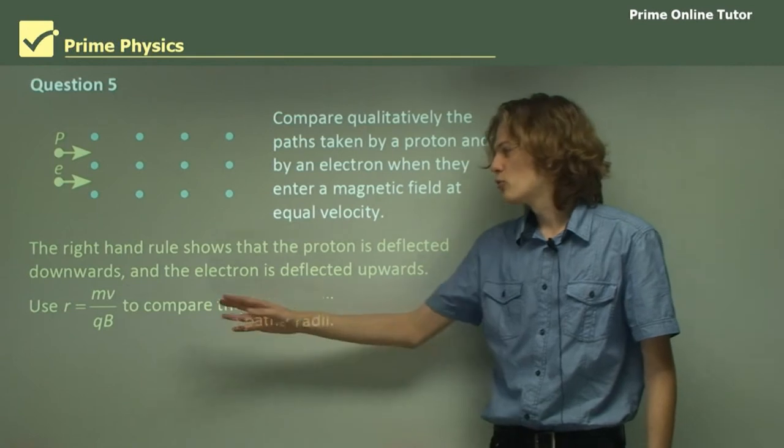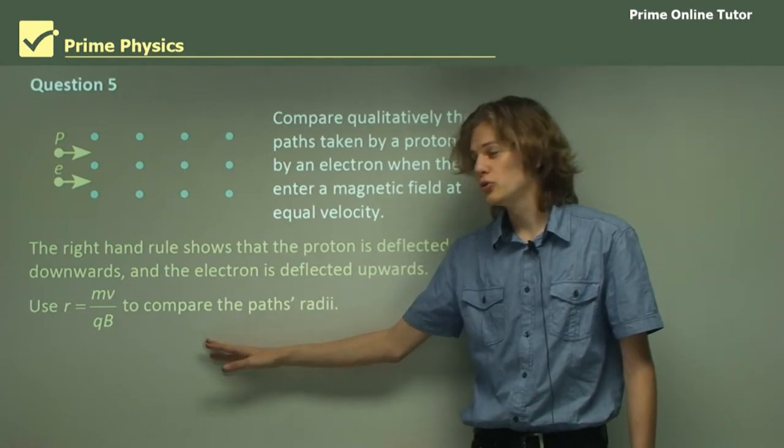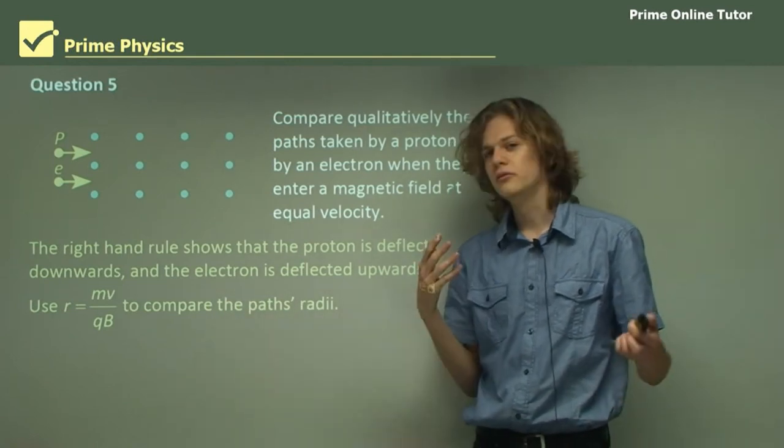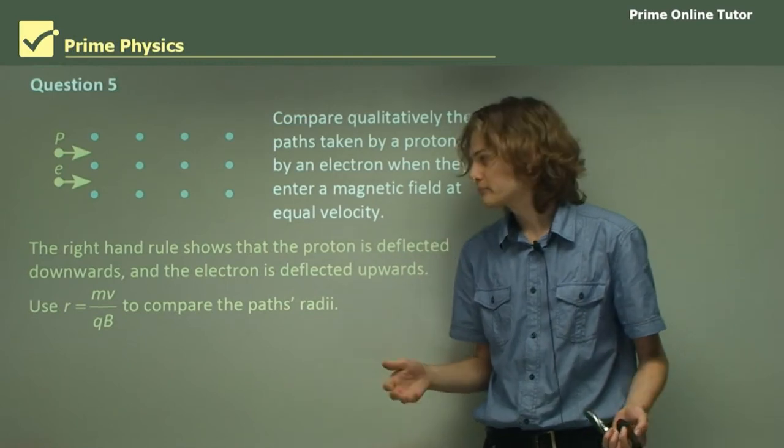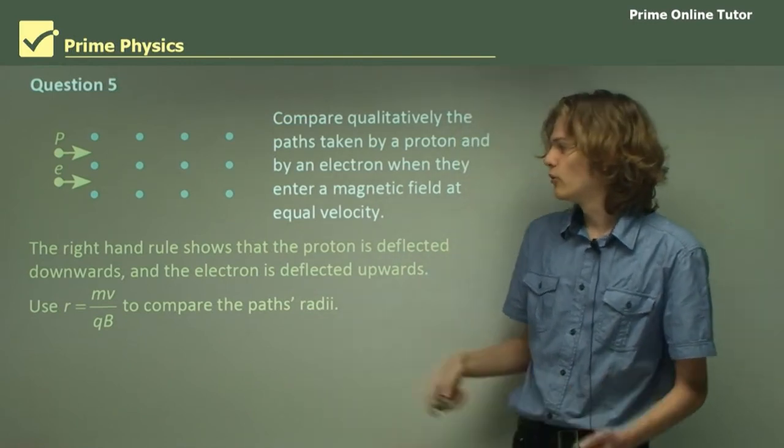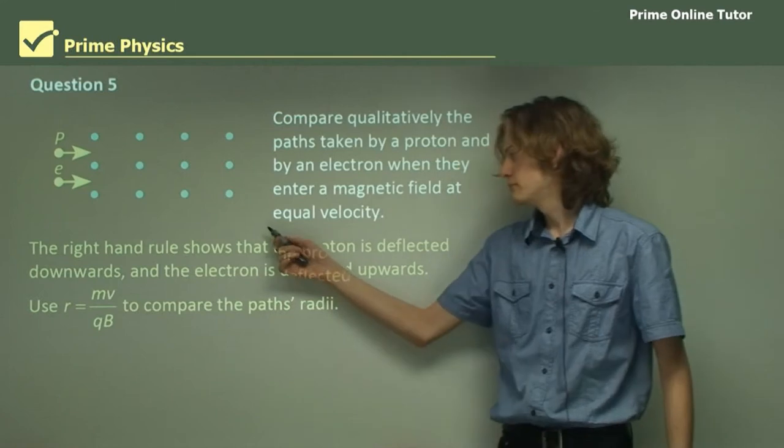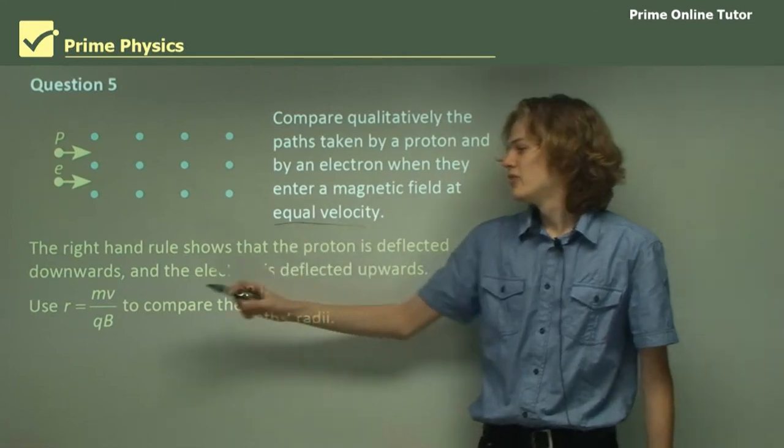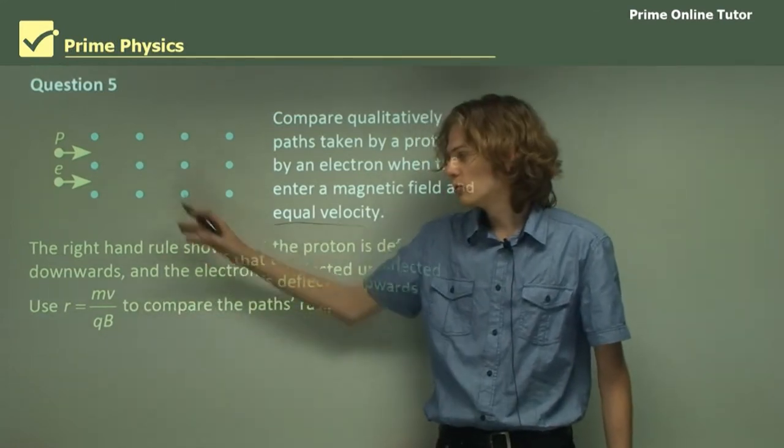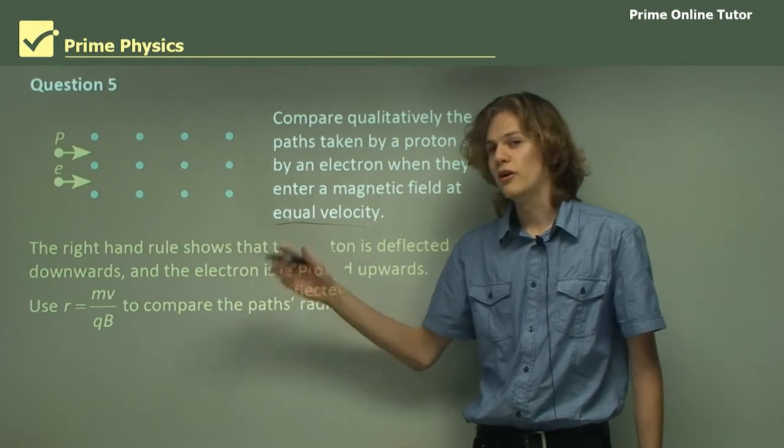So we can use our old equation, r equals mv on qb, to look at the difference between the path's radii. We know that the velocity of both particles is the same. The magnetic field is the same for both particles, and the charges, although they're opposite, are equal. The one thing that will change, depending on the particle, is the mass.